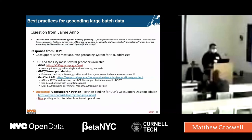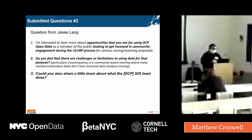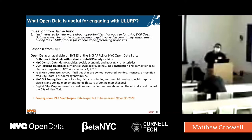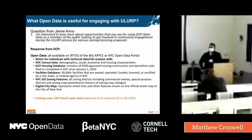Jesse Lang had some good questions. The first one was: what open data is useful for engaging with ULURP — the Uniform Land Use Review Procedure, the city planning process overseeing zoning changes, special permits, and other authorization applications? If you have technical training, GIS analysis training, and access to the software, we make a lot of open data available that is very helpful for engaging in this procedure. First would be NYC census data — if a rezoning is coming up, you can already analyze demographics, socioeconomic characteristics, and housing to see what the existing conditions are.